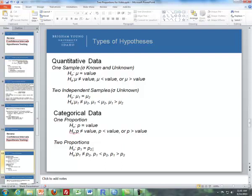P1 is equal to P2, so the two population proportions are equal. And then the alternative is that they're either not equal, or one's less than the other, or one is greater than the other.